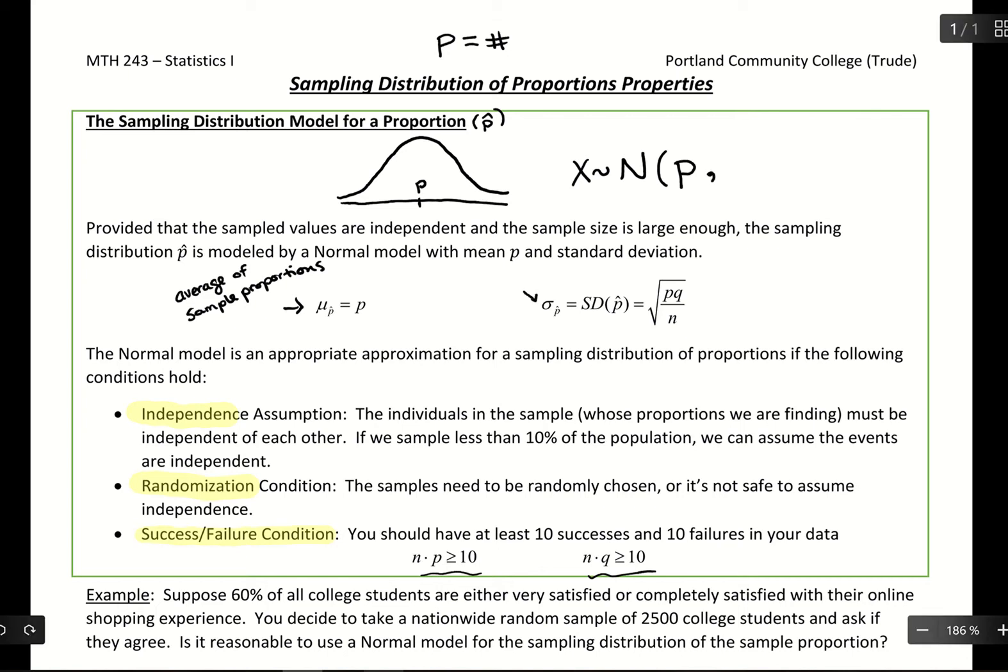Then for standard deviation, to have our standard deviation of sample proportions, take all those p-hat values, calculate the standard deviation. And how we can find that is taking the square root of p times q over n. And again, q is just 1 minus p. It's representing the probability of failure. So that'll set up our curve. And then from there, we can start calculating probabilities.